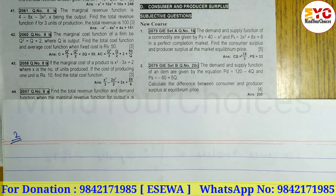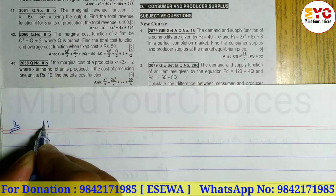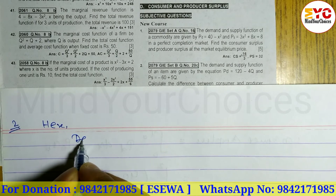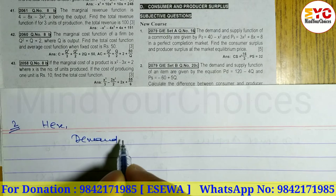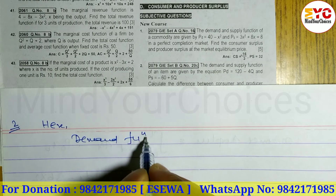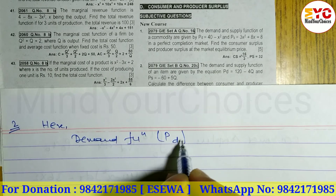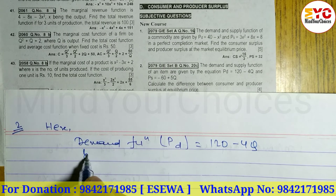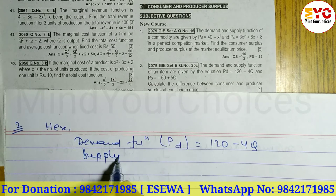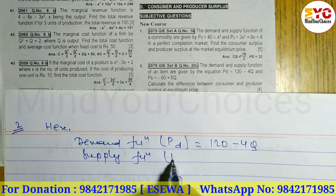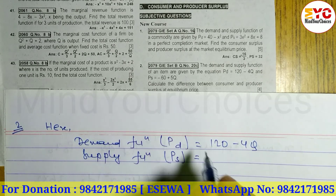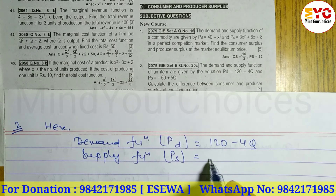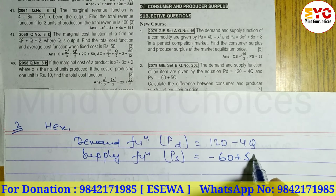So here we have the demand function and supply function. Let's start and write them down. The demand function is denoted by PD = 120 - 4Q. Similarly, the supply function PS is denoted by PS = -60 + 5Q.